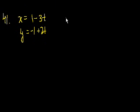So we could just say, if x is equal to y, we get 1 minus 3t has to equal this, which is 2t minus 1. 2t minus 1.